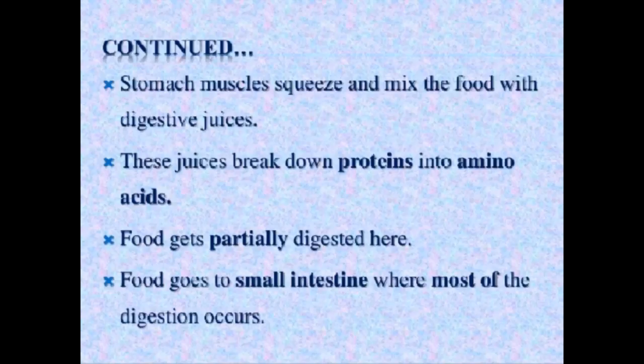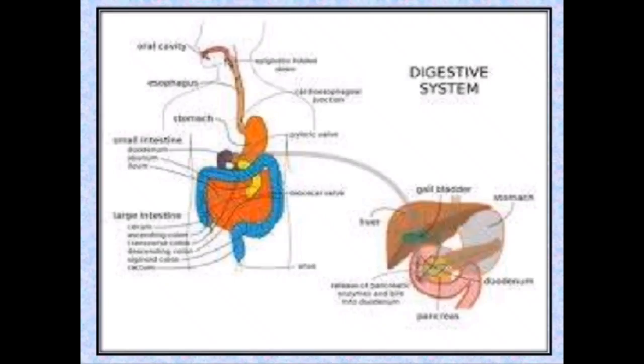The digestive juice in the stomach converts proteins into amino acids. The food is partially digested here, and then the food moves into the small intestine. After the stomach, the food goes to the small intestine where digestion continues.